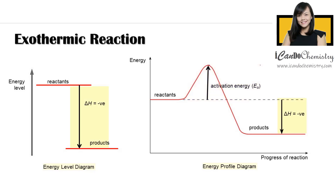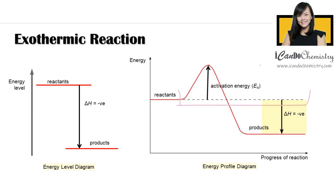Delta H in the exothermic energy profile diagram is still the energy difference between reactants and products, so the arrow is still pointing down and delta H is still a negative value. The only difference is that instead of touching the reactant and product energy levels directly, we include a dotted line, and the arrow pointing down touches the dotted line and the energy level of the products.